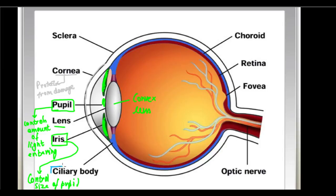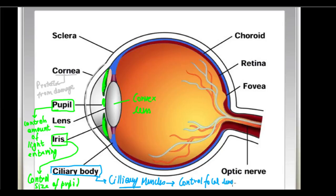Next we come to the ciliary body, or properly called the ciliary muscles. These control the focal length of the lens to focus on nearby and far objects accordingly.